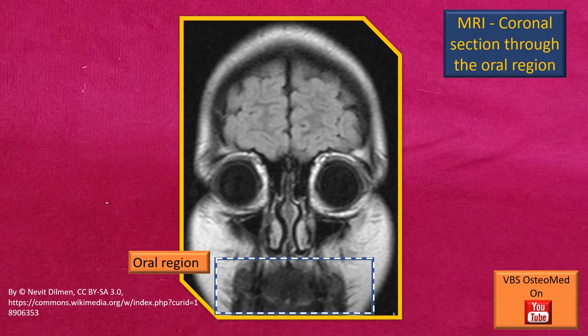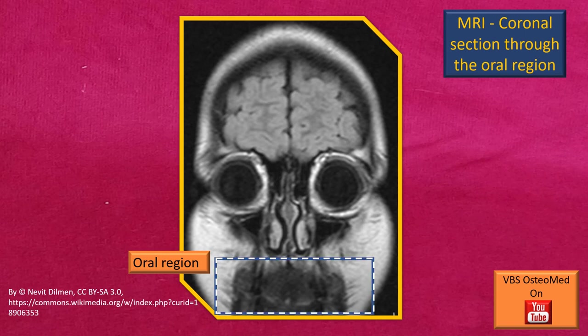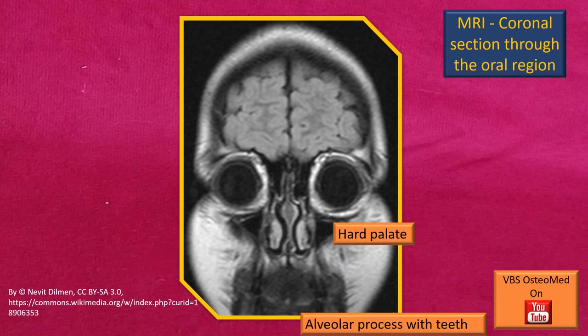This is a slide borrowed from the previous video. This is an MRI coronal section of the head region. You can see the lower oral region clearly highlighted. The upper blinking arrow indicates the hard palate, and the lower one is the alveolar process with teeth.